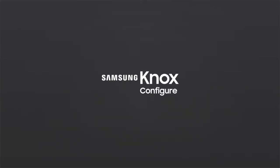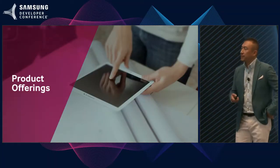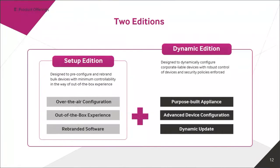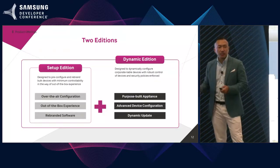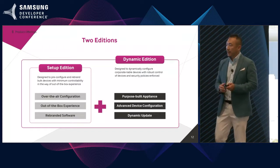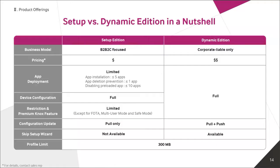I hope this video explained a lot of the benefits of Knox Configure. Now, let's turn to the product offerings. We have two types of business editions: the Setup Edition and the Dynamic Edition. The Setup Edition is optimized for the B2B-to-C consumer market, while the Dynamic Edition is designed for the corporate liable B2B market. Let's see the demo video.